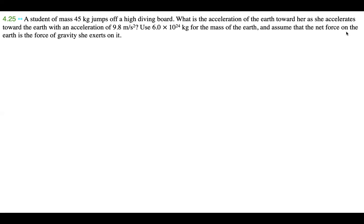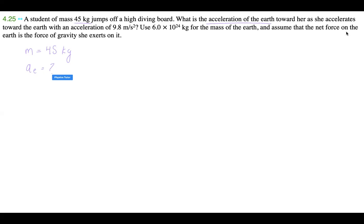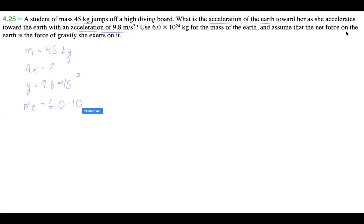Let's go ahead and first write down all of our knowns, because I think that's just the fastest way to get all of the information we need in one place. So we have our mass — that's 45 kilograms — and then we have the acceleration of the earth, which we don't know yet. She has an acceleration of 9.8 meters per second squared, and the mass of the earth is 6.0 times 10 to the 24 kilograms.